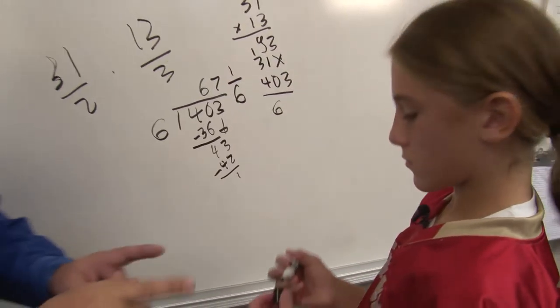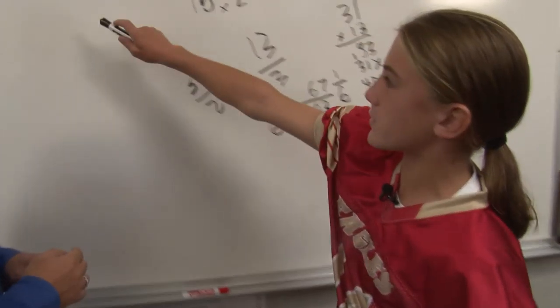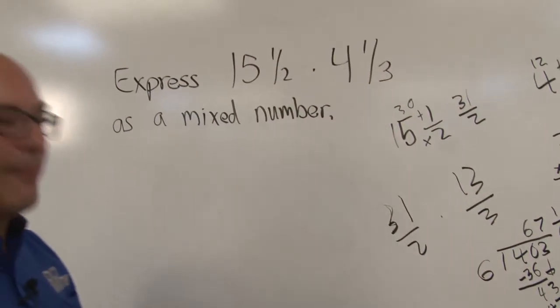Now, excellent, because you said we won't go to a decimal, we'll go to a fraction. Why? Because a mixed number does not involve a decimal. It involves a whole number and a fraction.